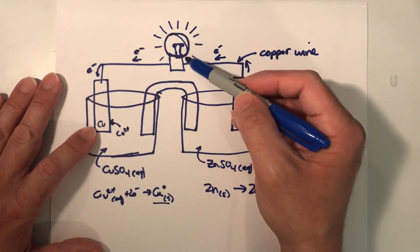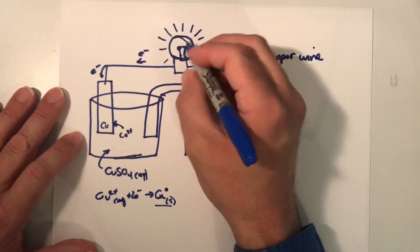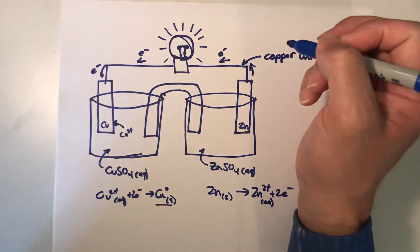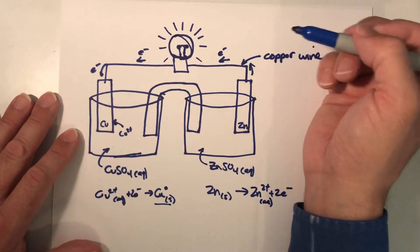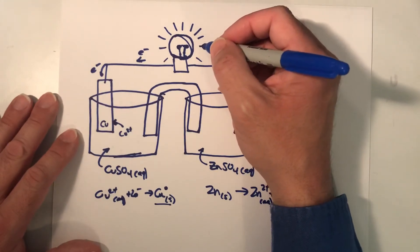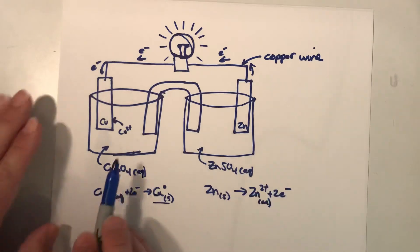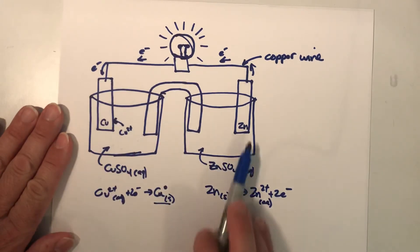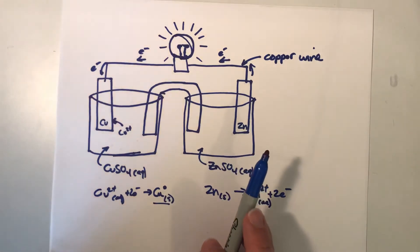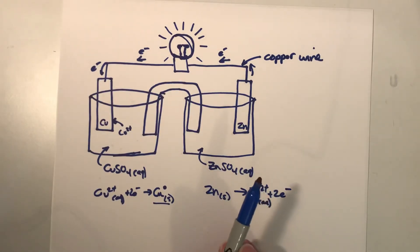As those electrons travel through the wire they can give up energy to something like a light bulb. Most of the time we're going to replace the light bulb with a voltmeter and measure the voltage of those electrons as they transfer. What you've really created here — copper sulfate solution next to a copper strip, zinc sulfate solution next to a zinc strip — is a battery. Modern batteries don't look like this, but it's the exact same chemistry inside a Duracell battery or your phone.